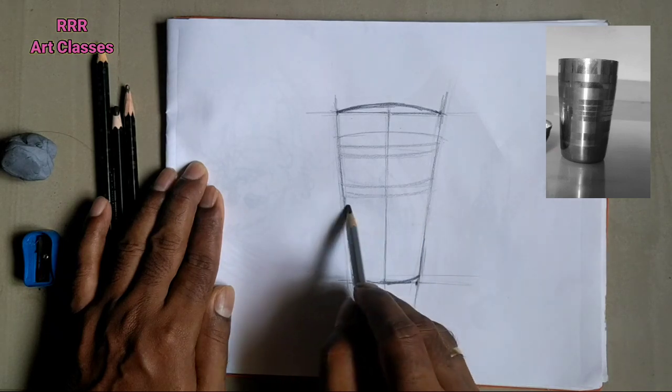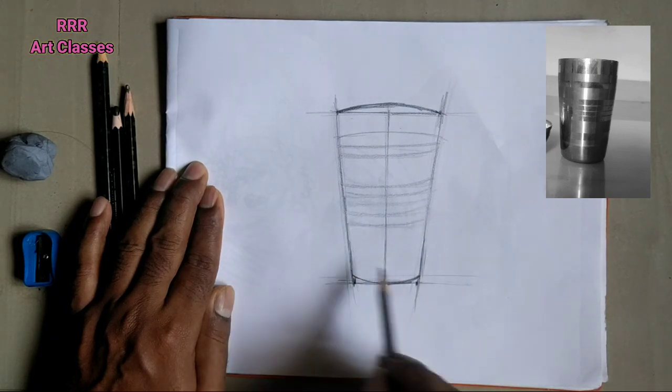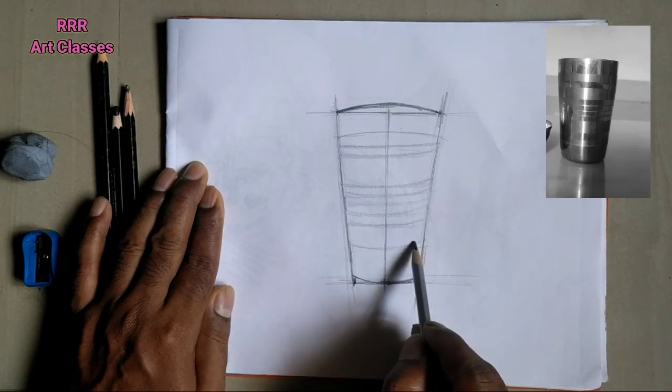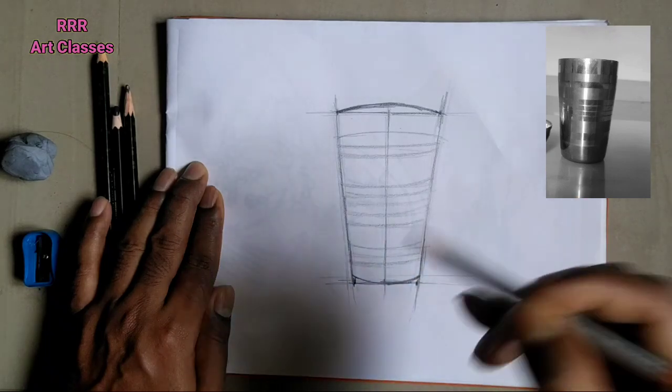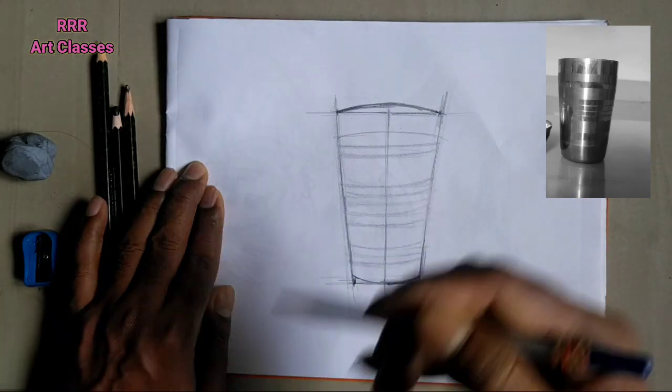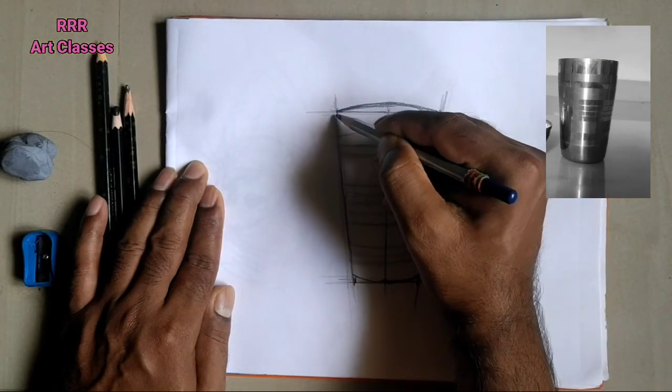So you can visualize that how I am doing on the paper very lightly and without any dark lines. Wherever it is required, there I am doing the dark strokes otherwise I start with very light strokes.